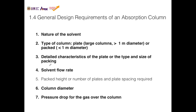Number three is to look at the detailed characteristics of the plate or the type and size of packing. For plate, be it either sieve tray, bubble cap tray, or valve tray. For the packed column, the type and size of packing such as Raschig rings or interlock saddles, and the size of the packing to prevent channeling.